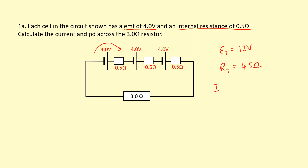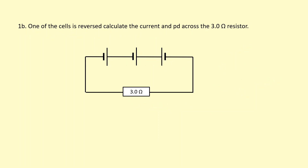The current in the circuit is going to be total EMF — which is 12 — divided by total resistance 4.5, giving a current of 2.67 amps. Applying Ohm's law: 2.67 times 3 gives 8 volts across the 3-ohm resistor. The remaining 4 volts is shared across those three internal resistors — that's the lost PD.